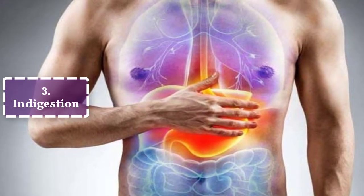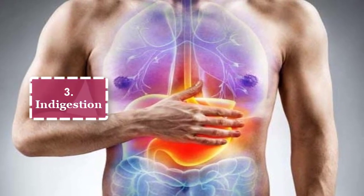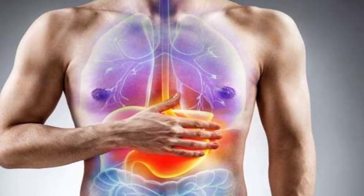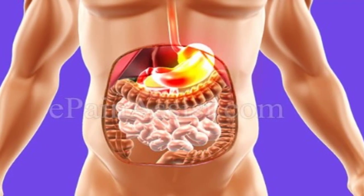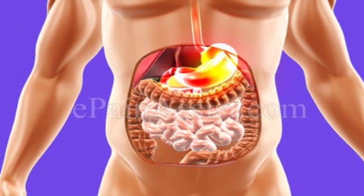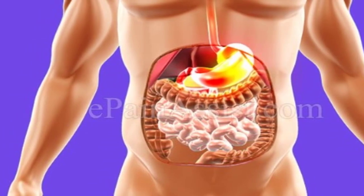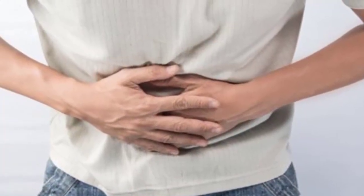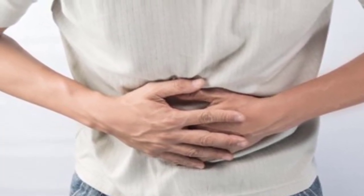3. Indigestion — Indigestion usually happens after eating. Your stomach makes acid when you eat, and this acid can irritate your esophagus, stomach, or bowel. The pain is usually in the upper part of the abdomen but in rare cases may also affect the lower abdomen. Indigestion is usually mild, and most people have had the discomfort, pain, or burning sensation that can go along with it.